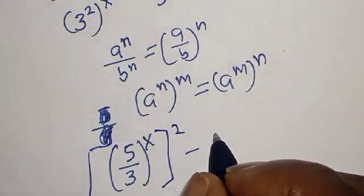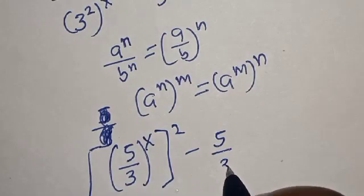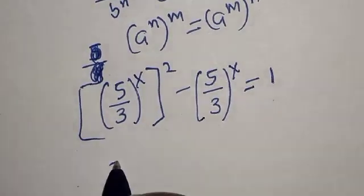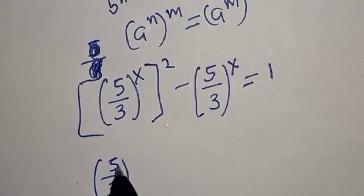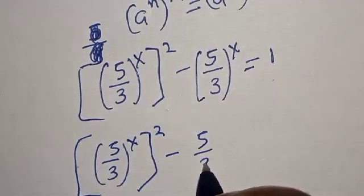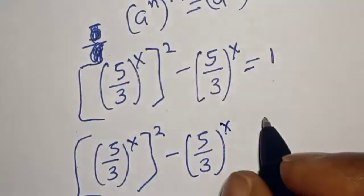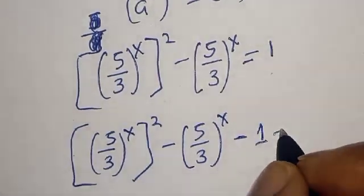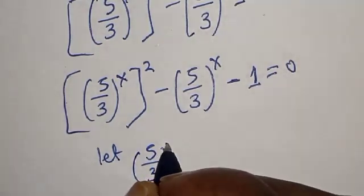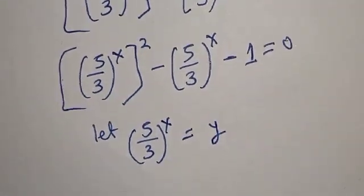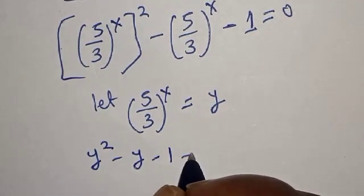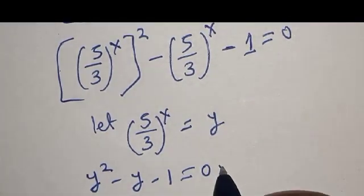This gives us (5/3) to the power of s squared, minus (5/3) to the power of s, is equal to 1. Rearranging: (5/3) to the power of s squared, minus (5/3) to the power of s, minus 1 is equal to 0. Now let y equal (5/3) to the power of s. We have y squared minus y minus 1 is equal to 0.